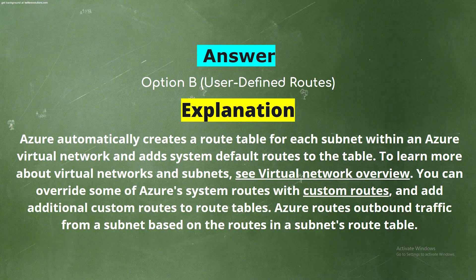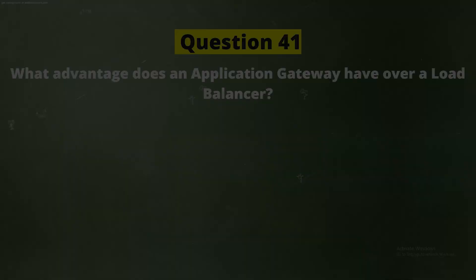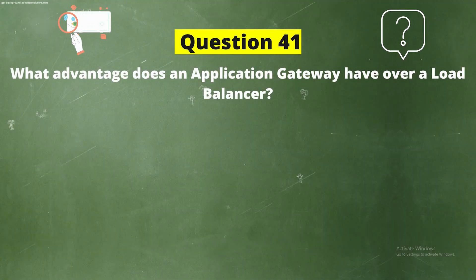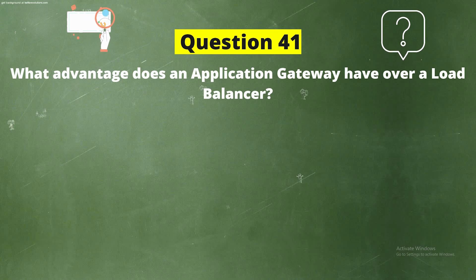To learn more about virtual networks and subnets, see Virtual Network Overview. You can override some of Azure's system routes with custom routes and add additional custom routes to the route table. Azure routes outbound traffic from a subnet based on the routes in a subnet's route table.